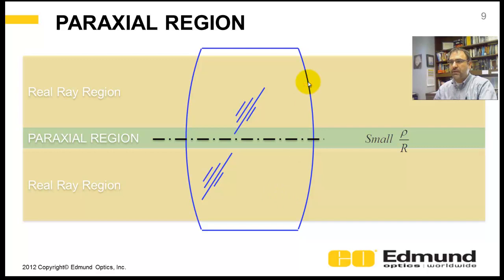Here's a lens, this blue lens, here's your optical axis, axis of rotation, and this green area here is the paraxial region where ρ on R is very small. You go outside that, up here and up here, you should be tracing real rays to get a high fidelity model.